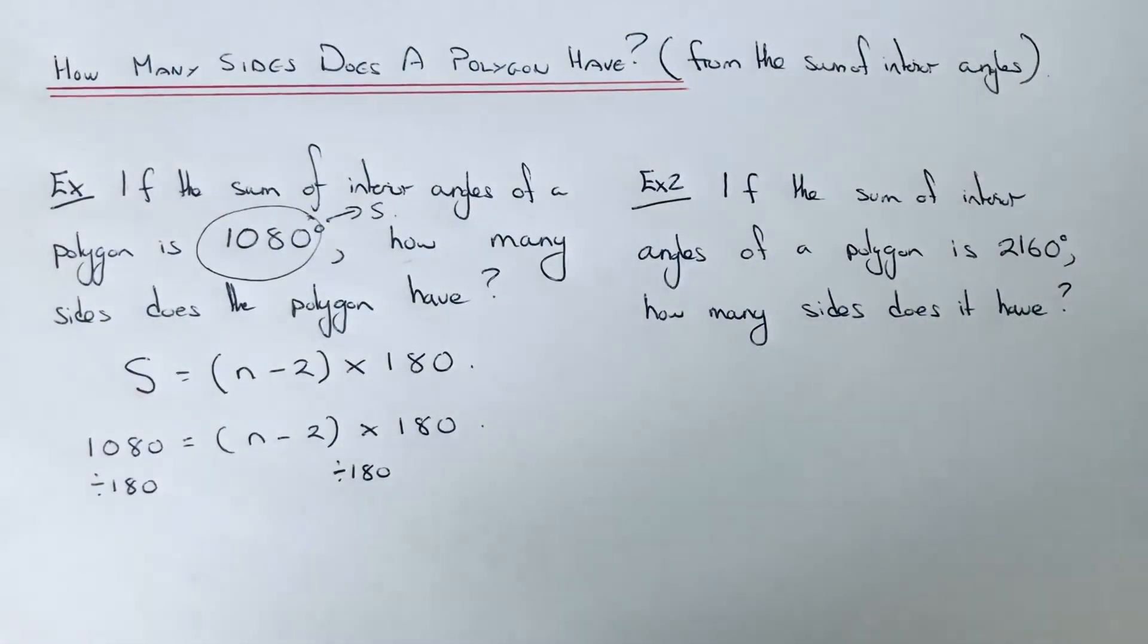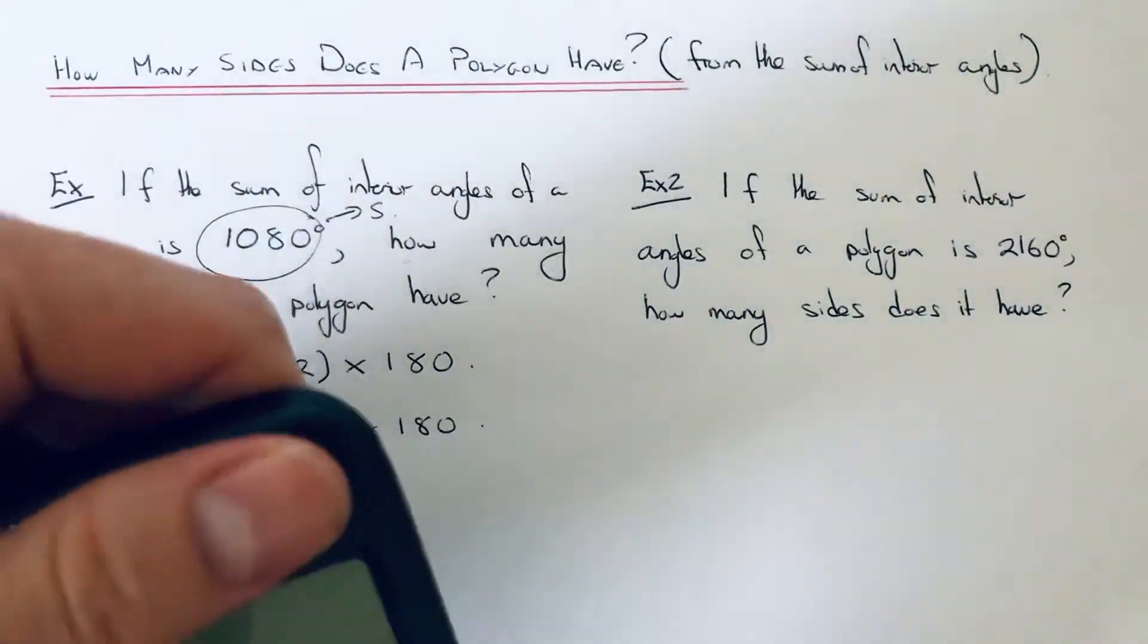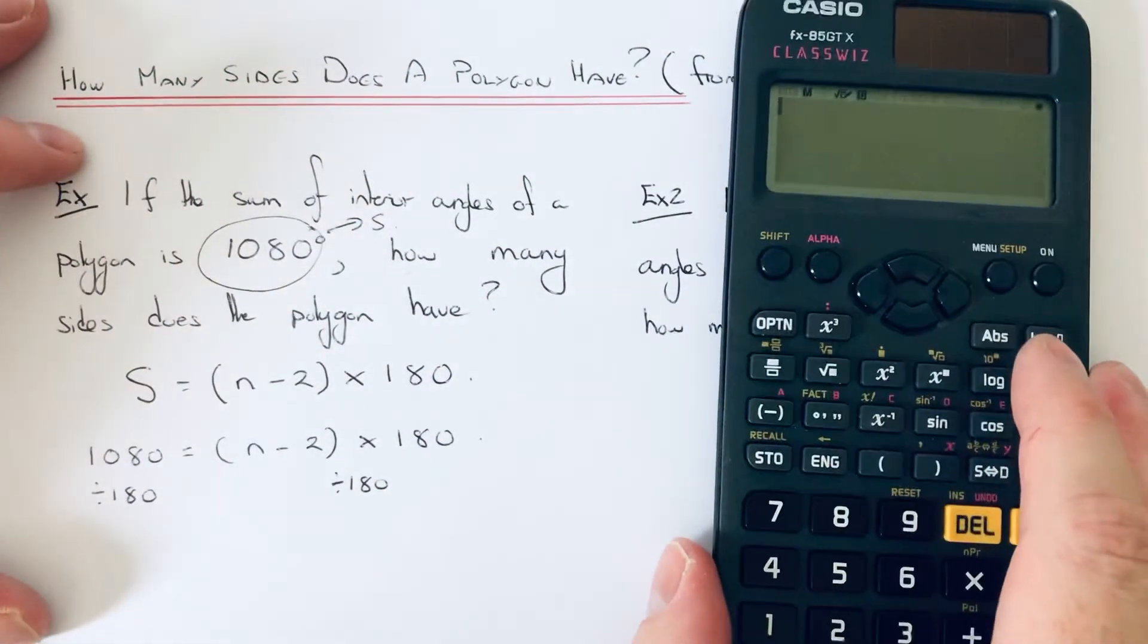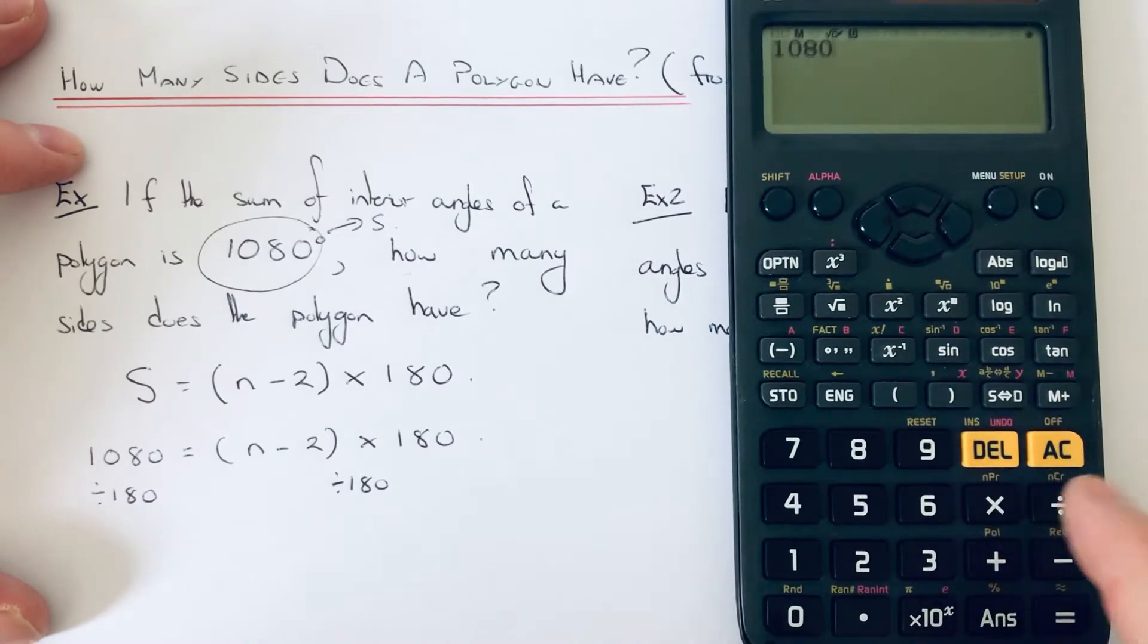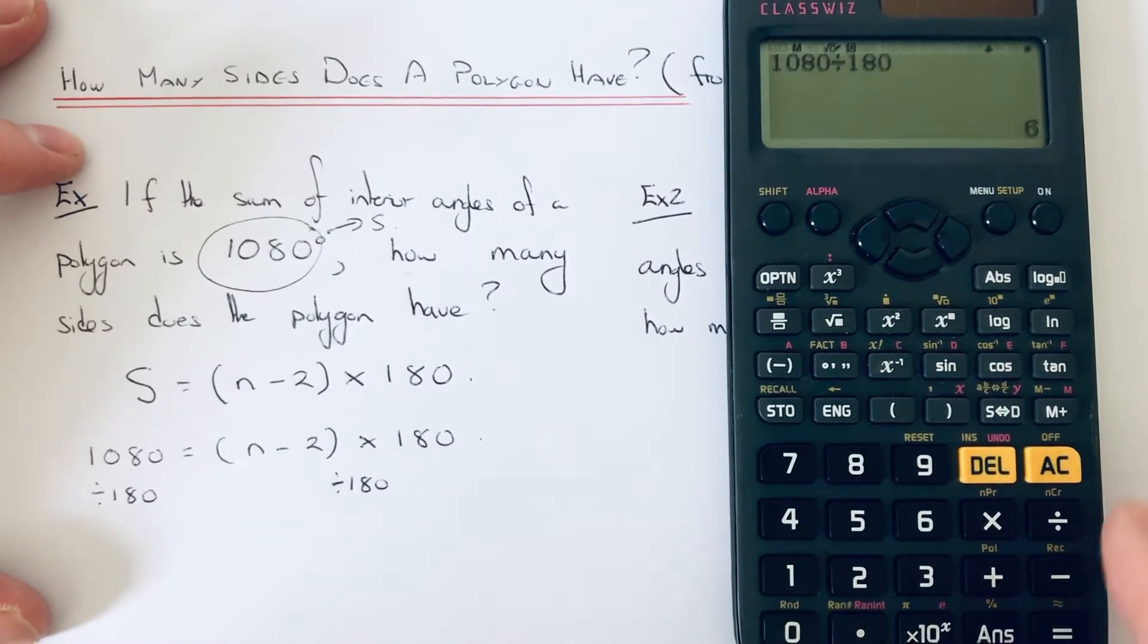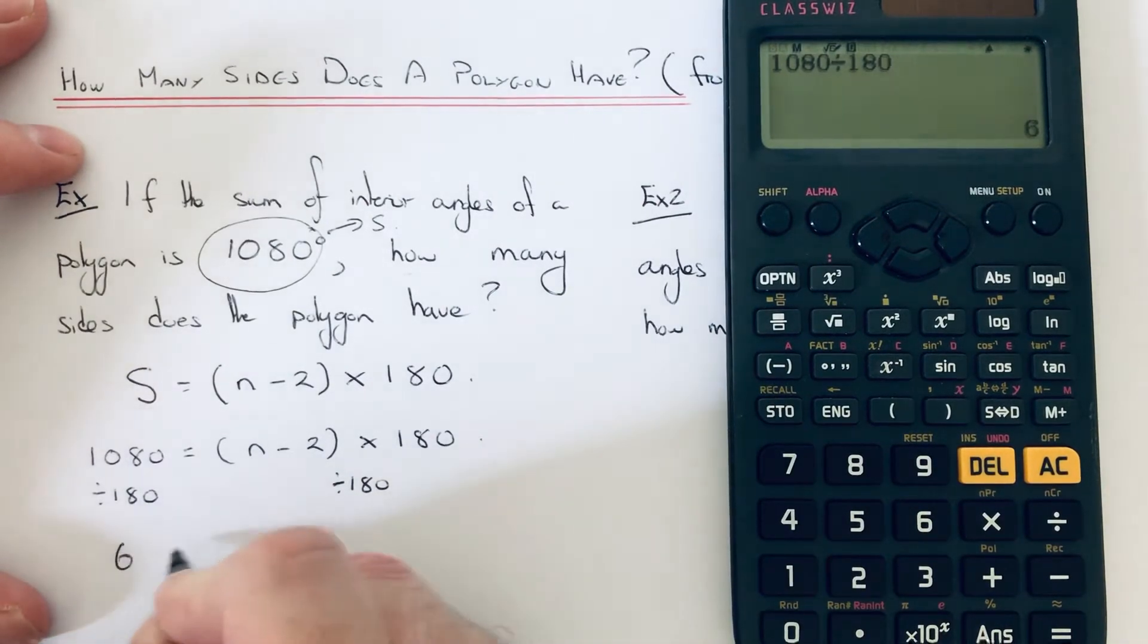Just do that on a calculator, so it's 1080 divided by 180, and that gives us 6.